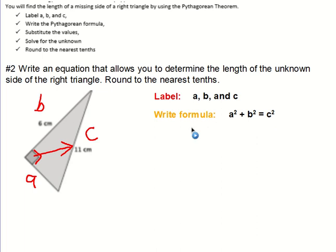Next step, we're going to substitute. We're going to substitute 6 for B and 11 for C. So do our substitution: A squared plus 6 squared equals 11 squared.